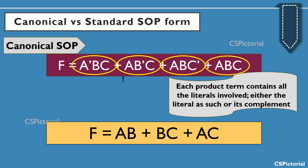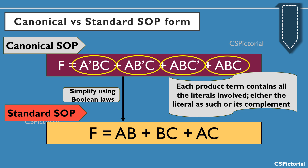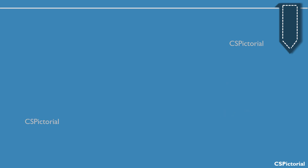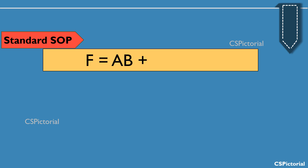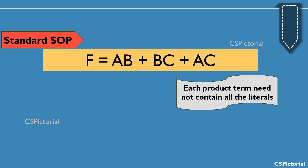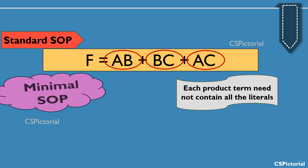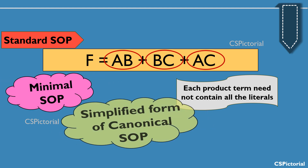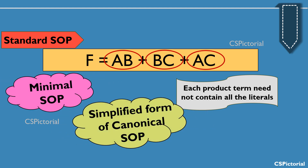When this expression is simplified using Boolean laws, we get the standard SOP. This SOP expression is said to be a standard SOP because each product term need not contain all the literals. For example, the term A·B doesn't include C; similarly, A is missing in one product term and B is missing in another. So standard SOP can also be called minimal SOP, or the simplified form of canonical SOP.